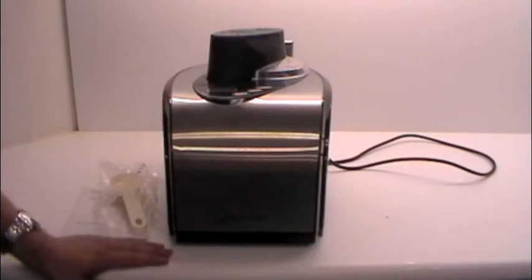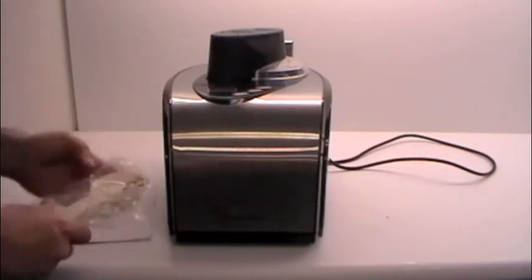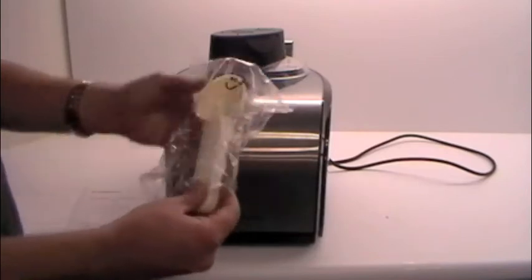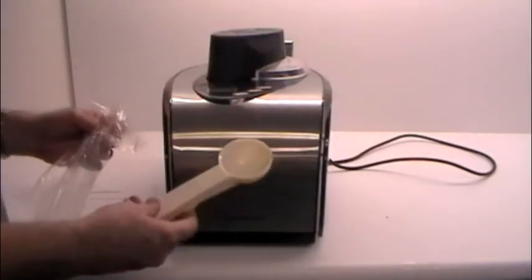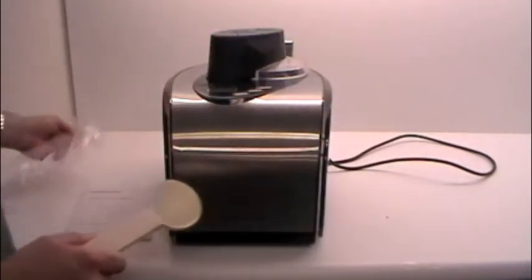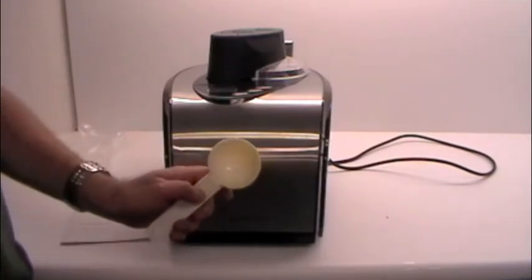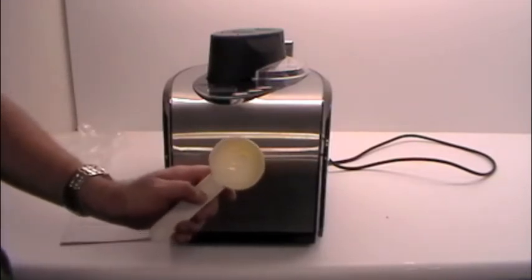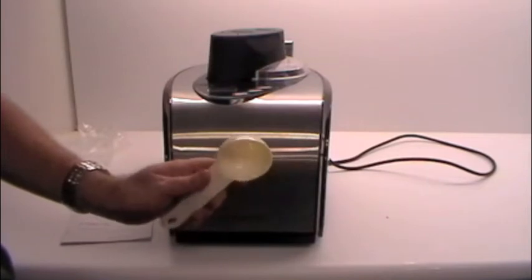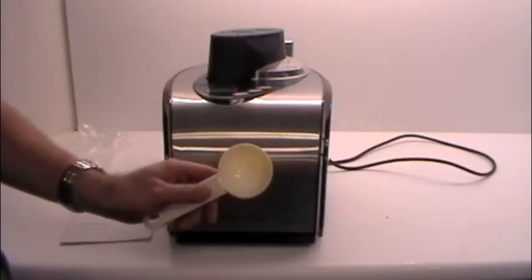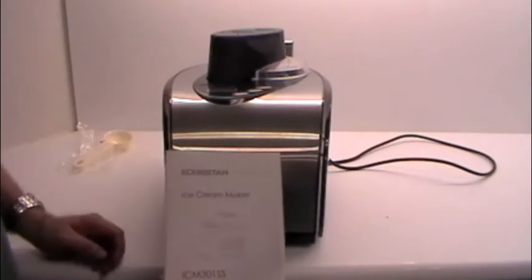So the first thing I'm going to show you is what comes in the box. First thing we have here is of course your ice cream scoop. And the nice thing about this one is it has a little eject here so you can just hit the button and it will help you eject the ice cream out of the bowl of the scoop. Of course we have our manual.